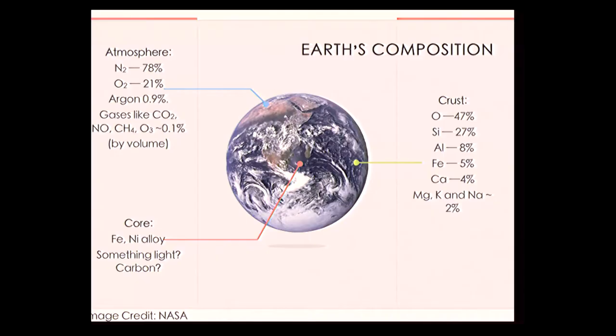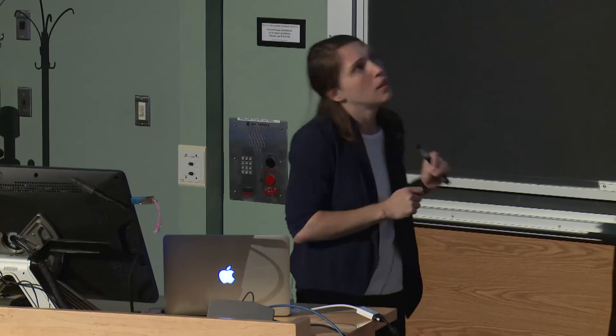Earth's atmosphere is mostly nitrogen — that's good for us — with a little bit of oxygen and trace species like nitrous oxide, methane, and carbon dioxide. The crust is mostly silicates, with some magnesium, aluminum, iron, and calcium. The very core is actually one of the most poorly constrained parts of Earth's composition. We know there's iron, nickel, and iron-nickel alloys, but there seems to be something lighter sprinkled in. One possibility put out by Michigan's own Jackie Lee is that maybe there's a little bit of carbon in there too.